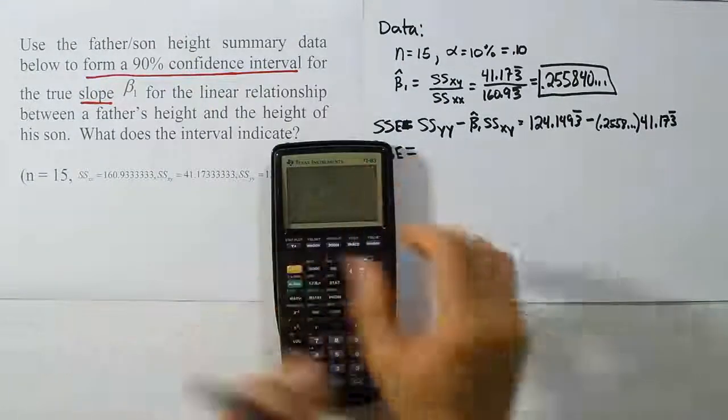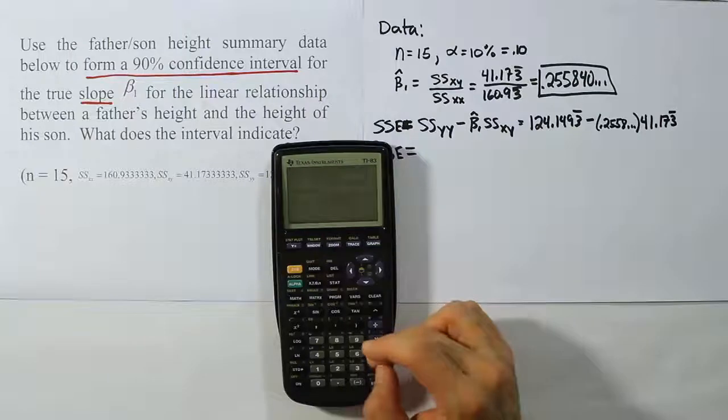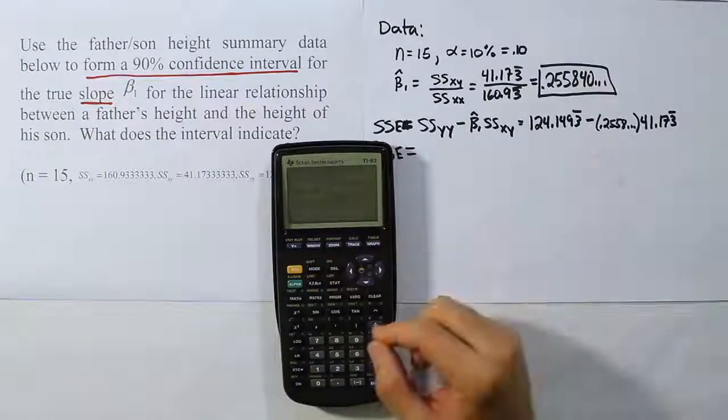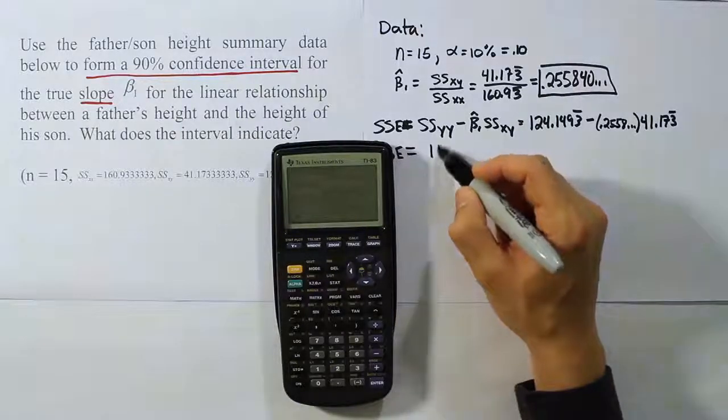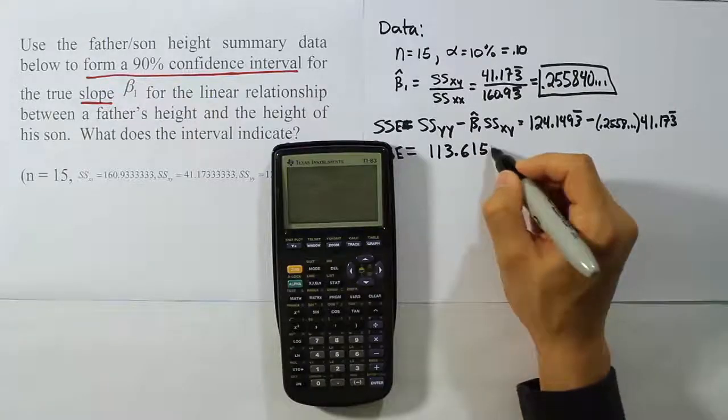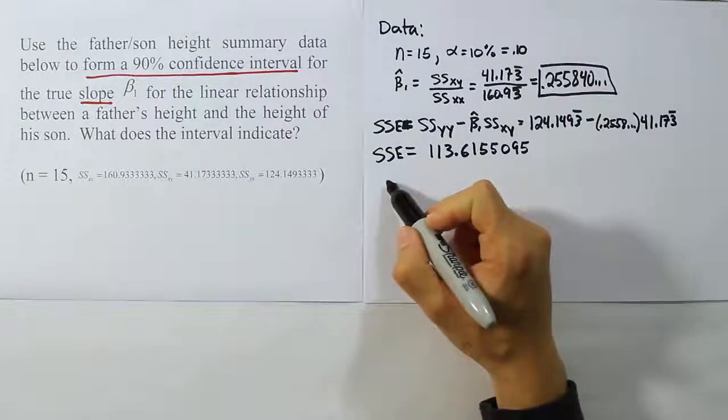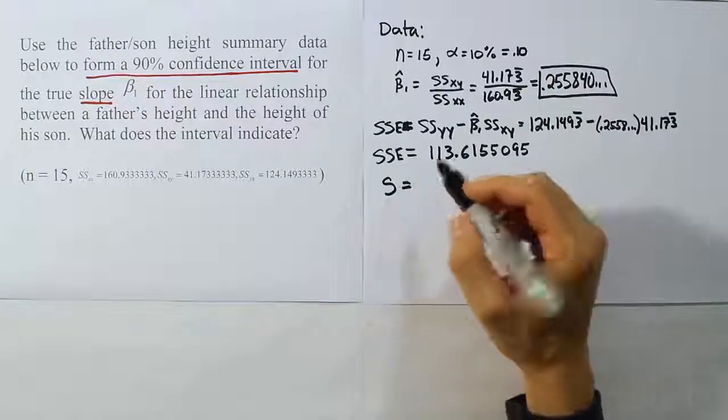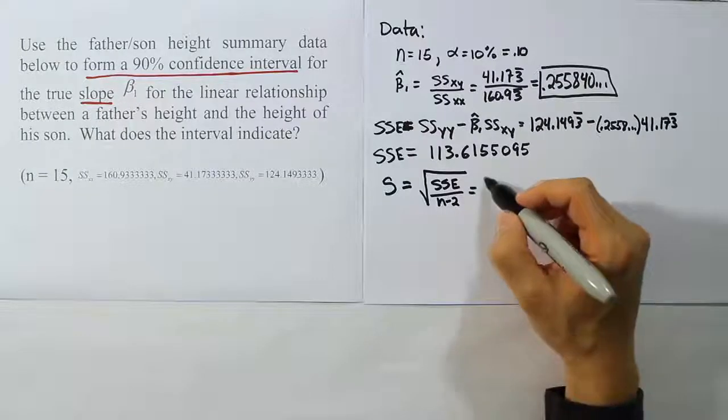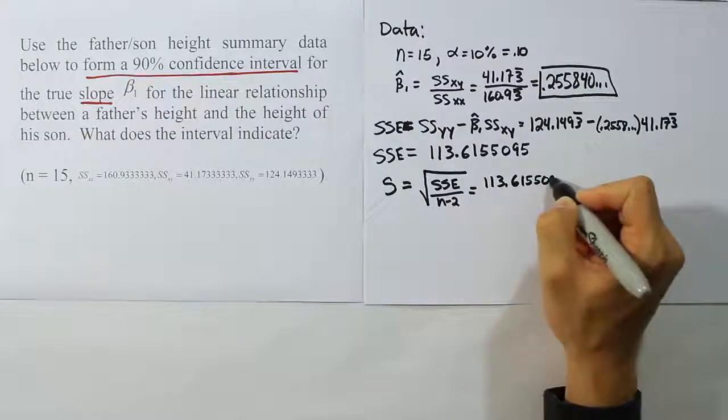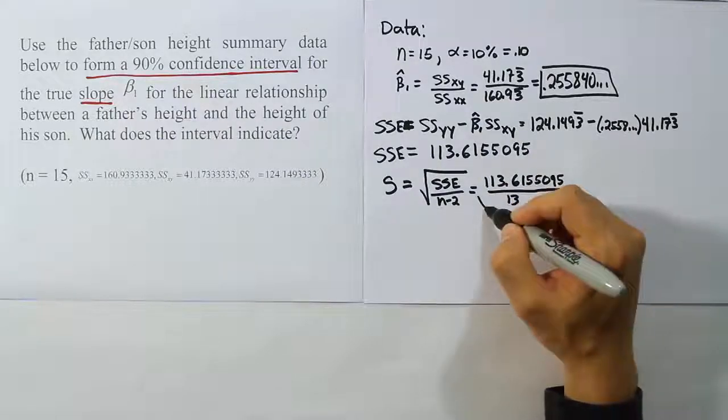Let's see what that turns out to be now in our calculator. So we will have 124.1493 repeating minus the value that we have above there, this slope value, times 41.173 repeating. And when we're done, we get the answer 113.6155095. So that's our sum of squares for error. Now we're going to take that value and we're going to use it in our next step of the process, which is to come up with the S value. This is the standard deviation for the error term in the problem, and that is going to be basically SSE over N minus 2. So that for us is going to be 113.6155095 divided by 15 minus 2, because our N is 15. Take away 2, we have 13. And then we're going to do the square root of that.